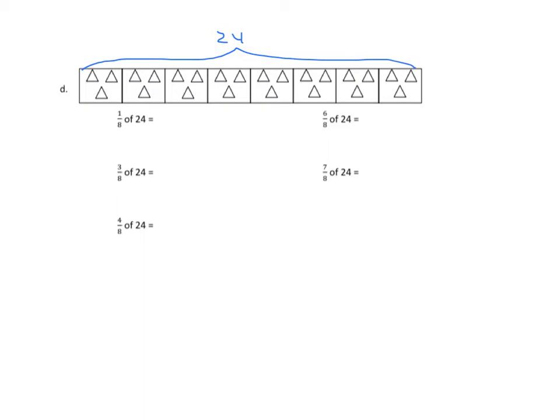Well, if I'm looking at this, if I want one-eighth, I would be bracketing one of these groups here. So I would bracket that right there, and what do I have? I have 3. So one-eighth of 24 is 3.